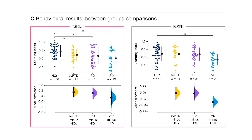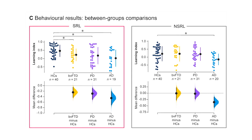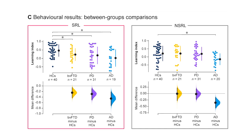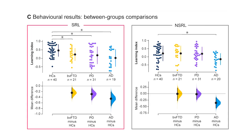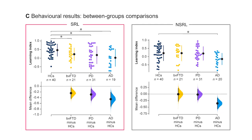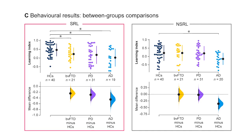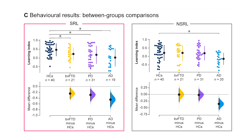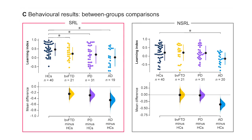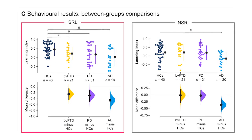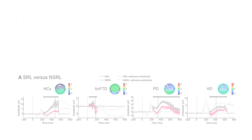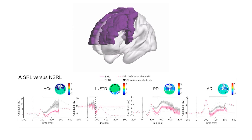Behavioral results revealed that in healthy participants, learning was facilitated by social feedback relative to non-social feedback. This effect was specifically impaired in frontotemporal dementia and Parkinson's disease, suggesting these groups do not benefit from social feedback during learning. In Alzheimer's disease, deficits across both social and non-social conditions indicate a generalized learning disruption.